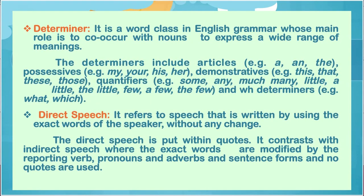Determiner — it is a word class in English grammar whose main role is to co-occur with nouns to express a wide range of meanings. Determiners include articles (a, an, the), possessives (my, your, his, her), demonstratives (this, that, these, those), quantifiers (some, any, much, many, little, a little, the little, few, a few, the few), and wh-determiners (what, which).